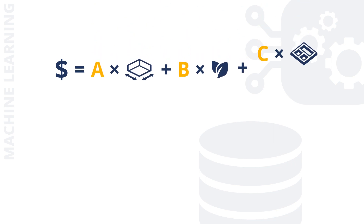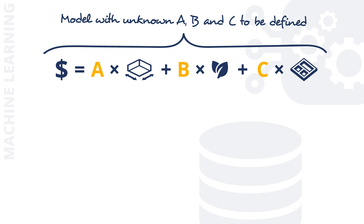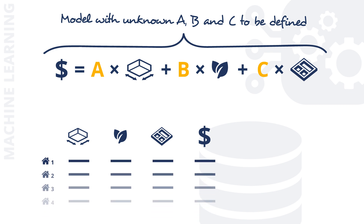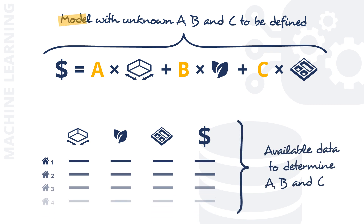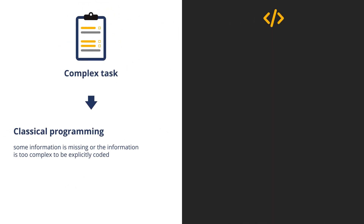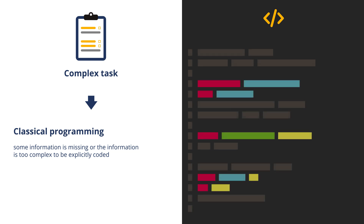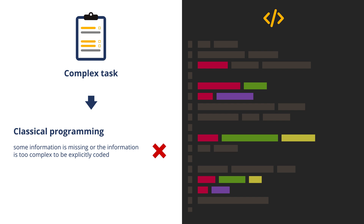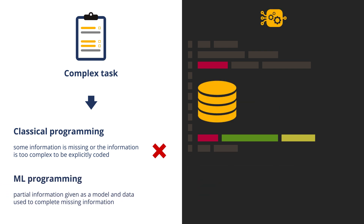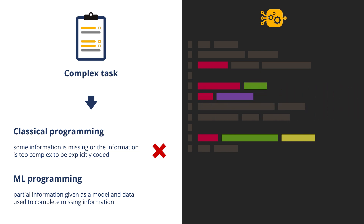On the other hand, we could build a machine learning algorithm. Such an algorithm would first define a model — which can be an incomplete formula created from our limited knowledge. Then the model would be adjusted by training on given housing price examples. In general, machine learning is incredibly useful for difficult tasks when we have incomplete information or information that's too complex to be coded by hand. We can give the available information to our model and let it learn the missing information by itself, using statistical techniques to extract the missing knowledge directly from the data.